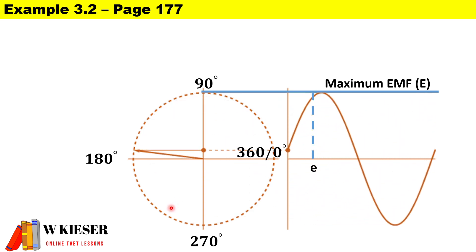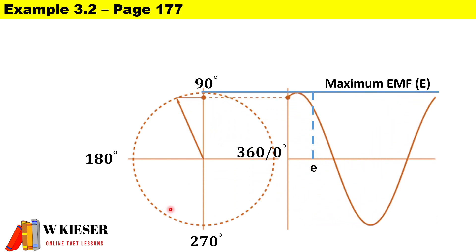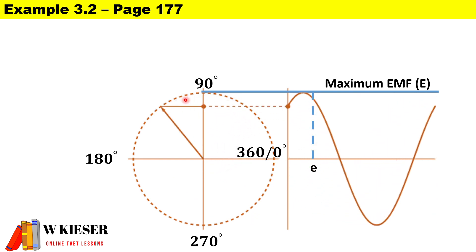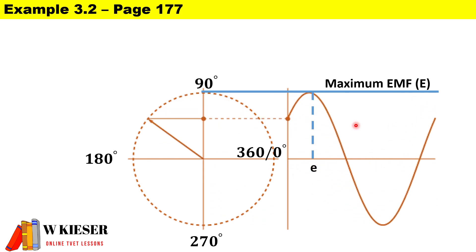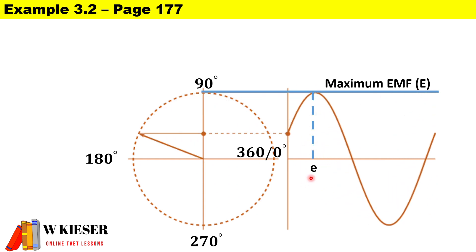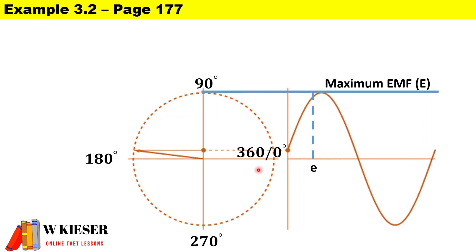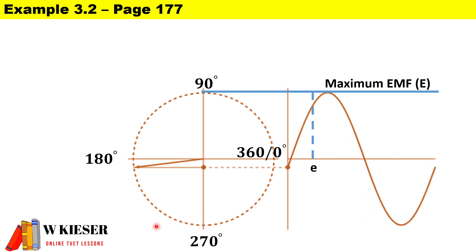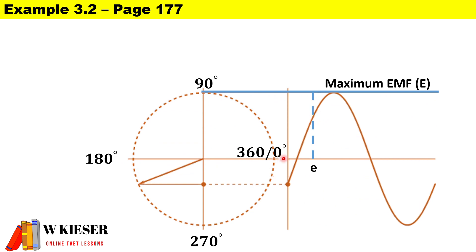We'll be doing example 3.2, which is a calculation for an alternating current waveform. Just to give some background: if we take a coil and rotate it 360 degrees, we produce a sinusoidal waveform. At 90 degrees we produce maximum EMF. The instantaneous value is the smaller values taken over half a cycle — maximum EMF is produced in the positive and negative half cycles, and no EMF is induced at 180 degrees, 360 degrees, and zero degrees.